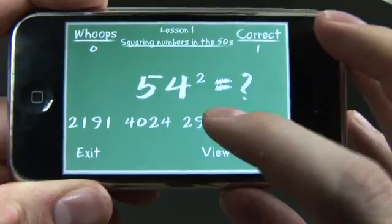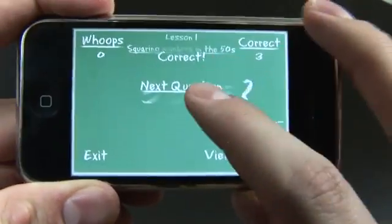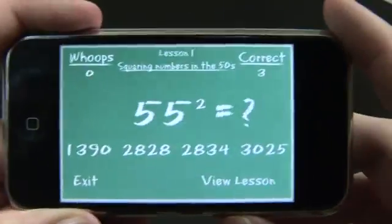So for example, I know now that this is 2916. And just like that, I am a math whiz, 3025, thanks to this cool math trick.